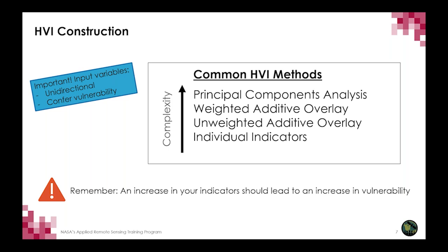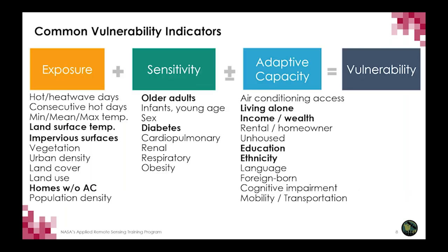What's key is that we want to make sure that our indicators and variables are all unidirectional, such that they confer vulnerability — meaning all of our variables increase vulnerability as they increase. We conceptualize vulnerability as a function of three components: exposure, sensitivity, and adaptive capacity. Data can be collected from a wide variety of sources, but you may be limited by your most limited factor. For instance, if you have health data only available for one year, the other variables you use in your HVI should be from around that same time period for consistency.